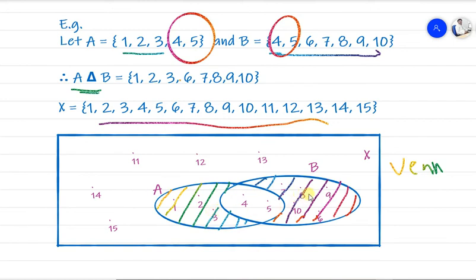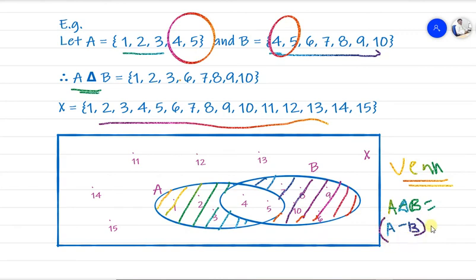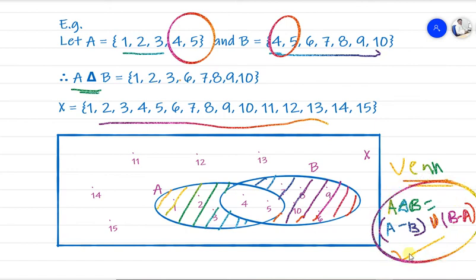Now we see what symmetric difference means in formula form. A symmetric difference B equals (A minus B) union (B minus A). When you find B minus A and A minus B and take the union of these two, you get the symmetric difference of A and B. This is another way to find the symmetric difference.